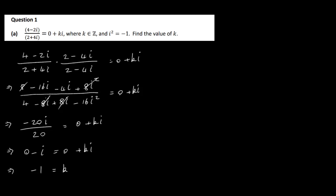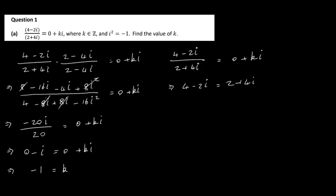The other way we could have done this: take 4 minus 2i divided by 2 plus 4i, knowing it equals 0 plus ki. We could simply multiply across by the denominator, so that gives us 4 minus 2i is equal to 2 plus 4i times 0 plus ki.